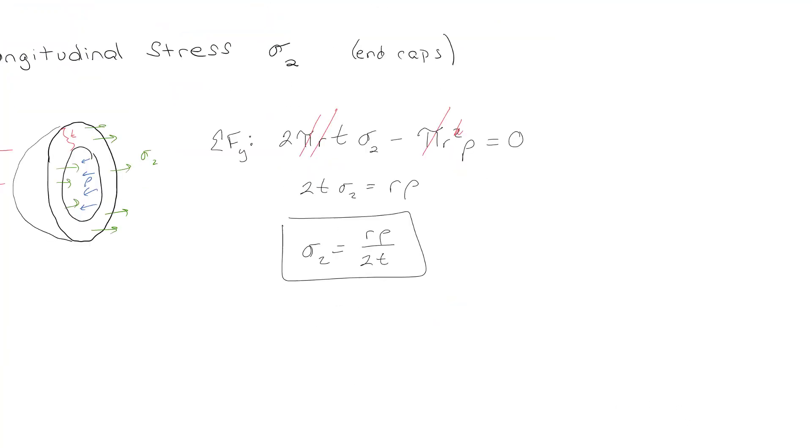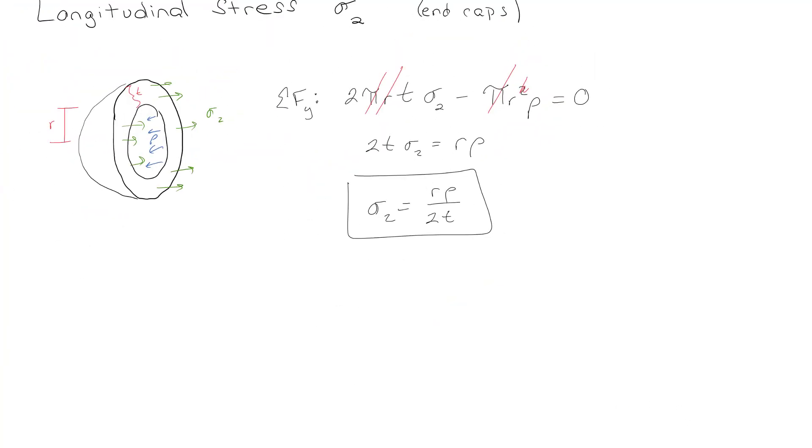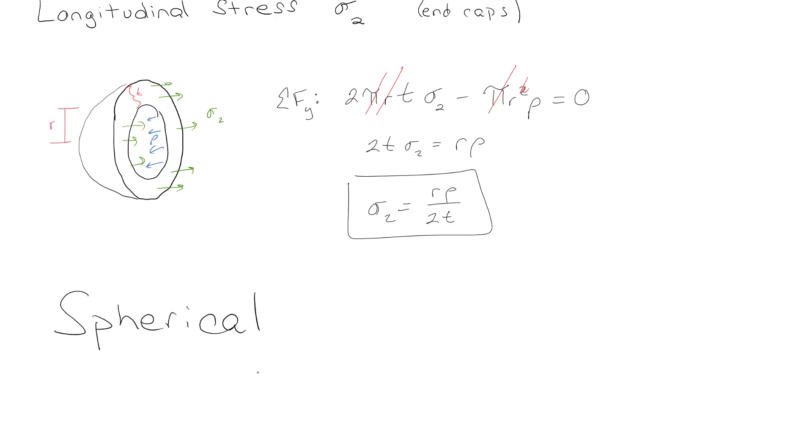We talked about cylindrical. I did promise you that we would talk about spherical. Spoiler alert here, is that everything in spherical is all longitudinal stress. So it's all that one half thing. So sigma equals p r over 2t.